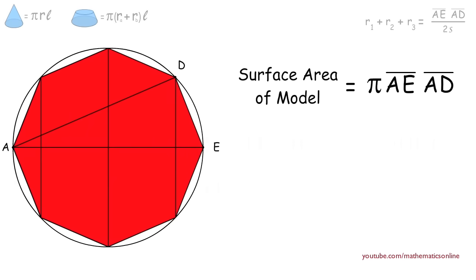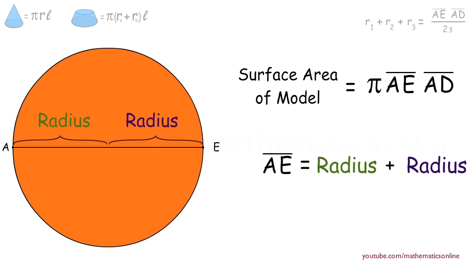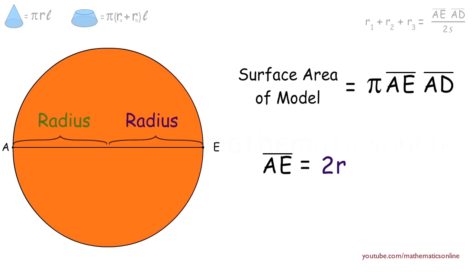Next, let's focus on line AE. In terms of our sphere, line AE is the diameter, and the diameter is equal to twice the radius of the sphere. Therefore, line AE is equal to 2R.